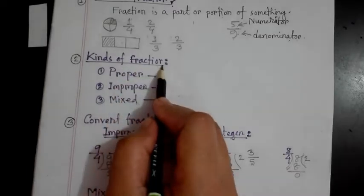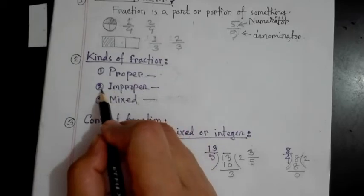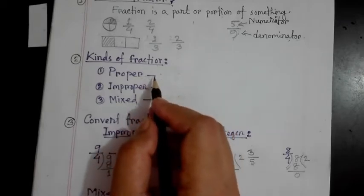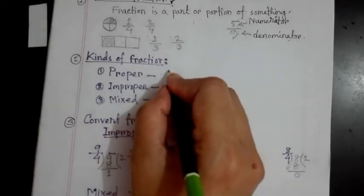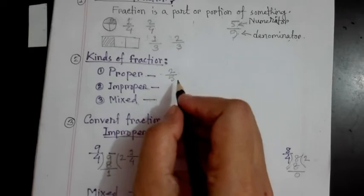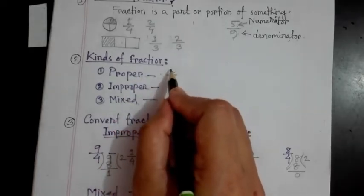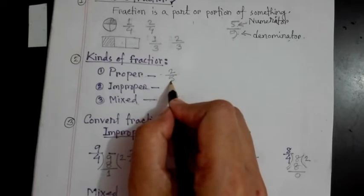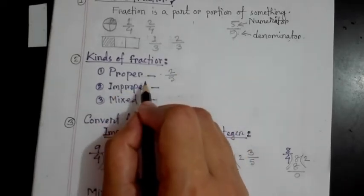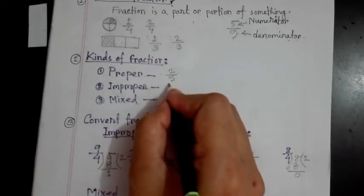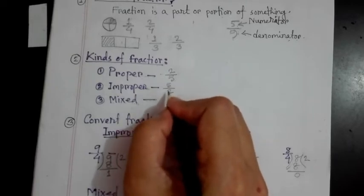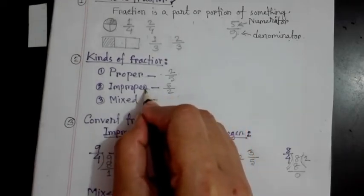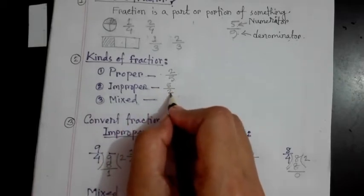Now we learn the kinds of fraction. There are three kinds of fraction: number one, proper fraction; number two, improper fraction; and number three, mixed fraction. For this, I first write an example: two by five. What is a proper fraction? If the numerator is smaller than the denominator, then it is called a proper fraction. Look here — numerator is smaller and denominator is greater, so it is a proper fraction. What is an improper fraction? It is just the opposite of a proper fraction. You can write here five by two. If the numerator is greater than the denominator, then it is called an improper fraction.